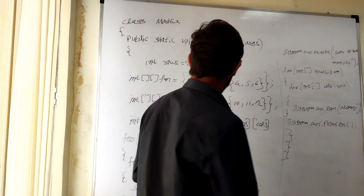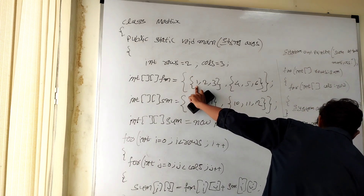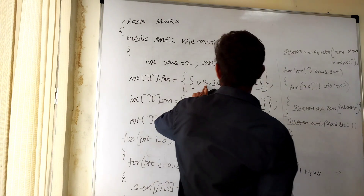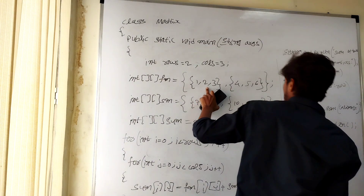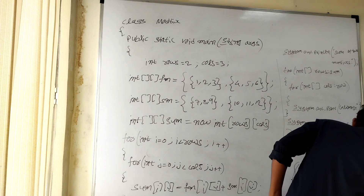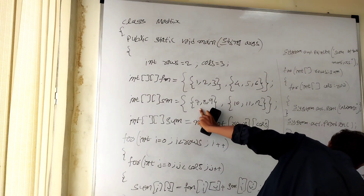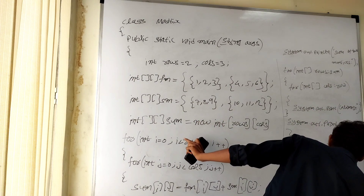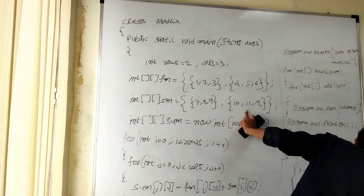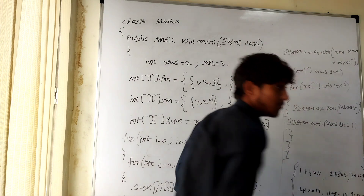Can you tell the output of the program? Yes sir. We take the logic: first matrix plus second matrix. First matrix first element is 1, second matrix first element is 4 — so 1 + 4 = 5. First matrix second element is 2, second matrix second element is 5 — 2 + 5 = 7. Three plus six equals nine. Then for the second row: 7 + 10 = 17, 8 + 11 = 19, and 9 + 2. This is the output of the program. Good. Thank you sir.